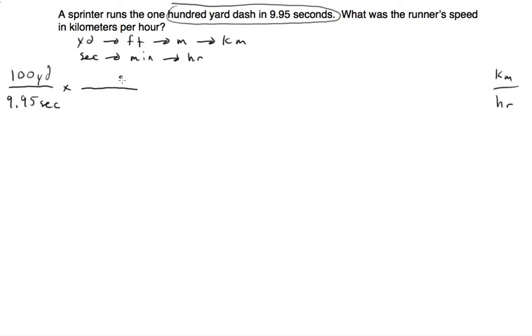We can do seconds. That will go on top, minutes on the bottom. So we know that one minute is 60 seconds, and then we just got rid of seconds. So now minutes will go on top and hours will go on the bottom. And we know one hour is 60 minutes. So now we have converted seconds into hours, and they're on the bottom where we want them. That's perfect.